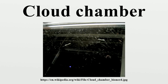In particular, the discoveries of the positron in 1932, the muon in 1936, both by Carl Anderson, and the kaon in 1947 were made using cloud chambers as detectors. Anderson detected the positron and muon in cosmic rays.